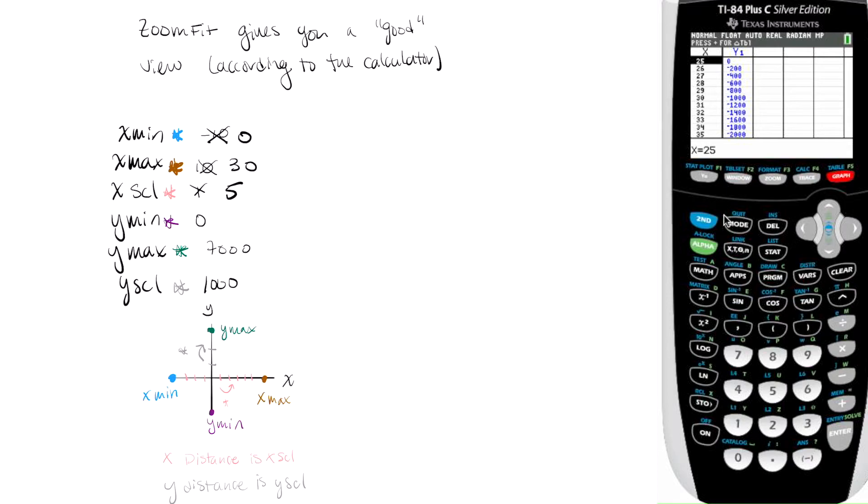And then for the y-intercept, I can do something really similar. I think the y-intercept is at about 5,000. So let's go ahead and start a table at 0 this time. And then go back to the table. And sure enough, there's the y-intercept.